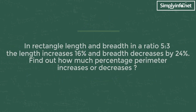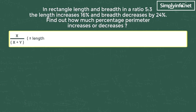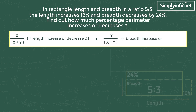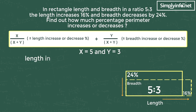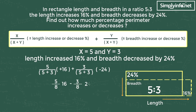Let's apply this to the problem. We can see a 5 is to 3 ratio, so x equals 5 and y equals 3. Length increased by 16% and breadth decreased by 24%, so we use plus 16 and minus 24. That gives us: (5 divided by 8) into 16 plus (3 divided by 8) into minus 24. Simplifying: 8 times 2 is 16 and 8 times 3 is 24, so we get 5 times 2 minus 3 times 3, which is 10 minus 9 equals 1.